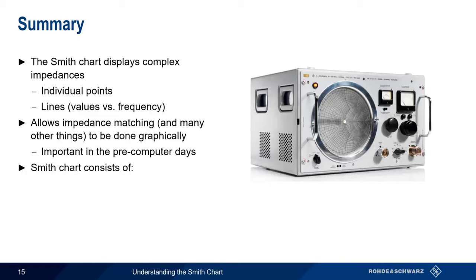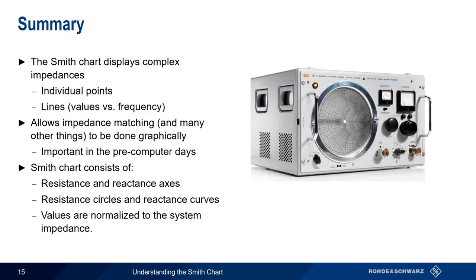A Smith Chart consists of resistance and reactance axes, and resistance circles and reactance curves. And lastly, remember that values on the Smith Chart are always normalized to the system impedance.